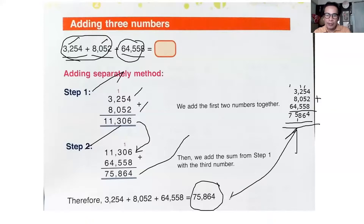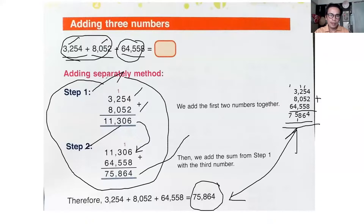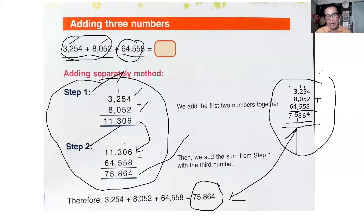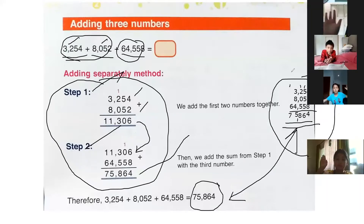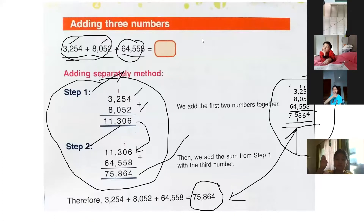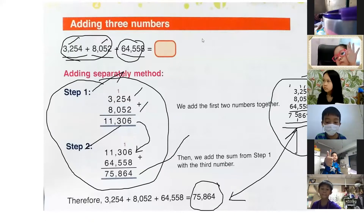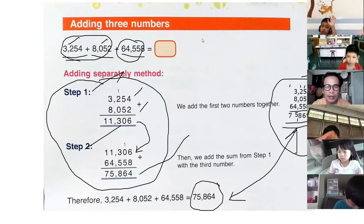So you can do the first method — step one and step two — if you want. Or if you are very smart, you can add the three addends all together. Who understood? Show me your thumbs up if you understood.